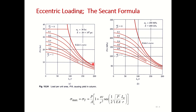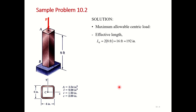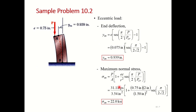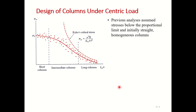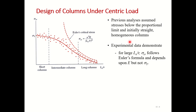The units shown are kilopound per square inch and megapascal, which are approximately equivalent. We will discuss problems later. Now we discuss the topic: Design of Columns Under Centric Loading. The previous analysis assumed stress below the proportional limit, initially straight and homogeneous columns, based on the Euler curve.